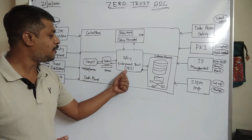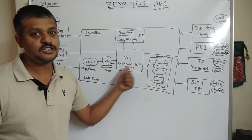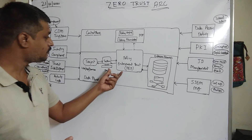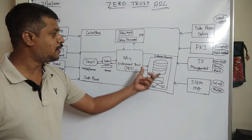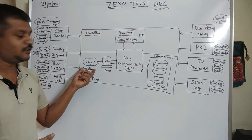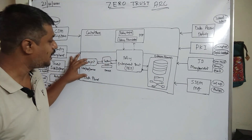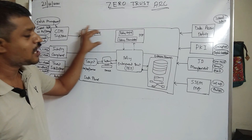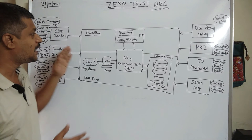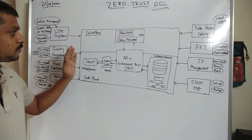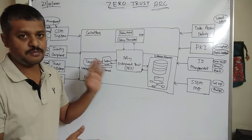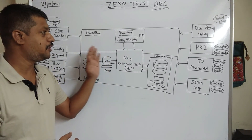If authenticated properly, the subject gets access through the policy enforcement point to enterprise resources. The policy enforcement point sits in the middle between the enterprise resources and the subject. This overall setup — the policy engine and administrator — is called the control plane, while the enforcement and access layer is called the data plane. If you have doubts, comment below and I will try to reply.